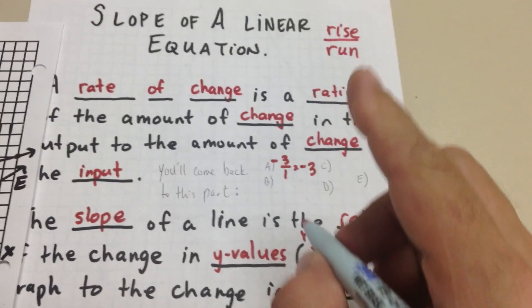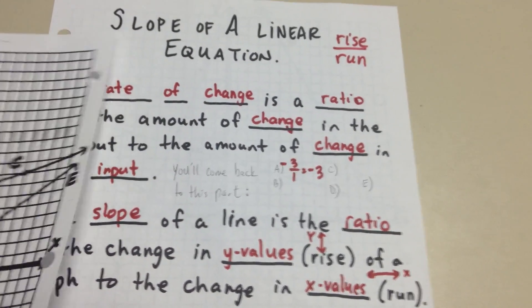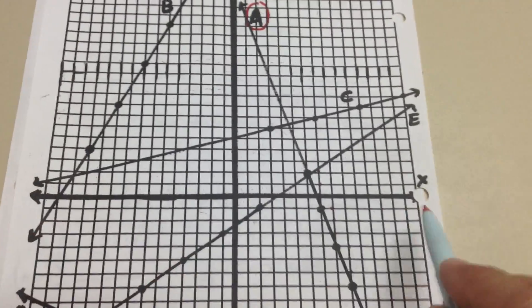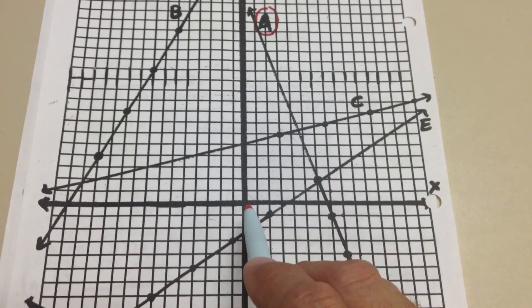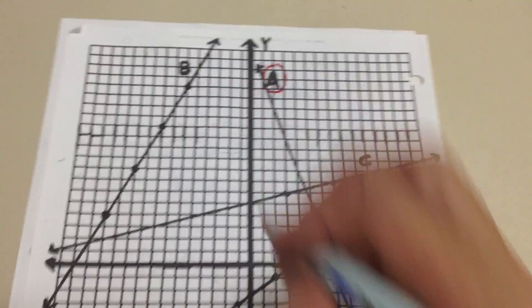So anytime you go up and then left, it's going to be a negative slope. That's a pretty simple thing to think about if you just think of, you know, your number line here. We want to think of our x-axis as a number line. Well, to the left is negative. So when you're going up and left, that's going to make it a negative.